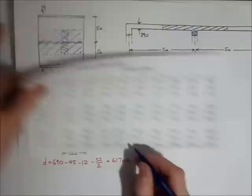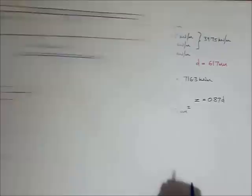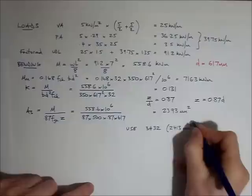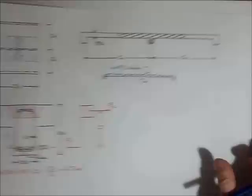So I'm going to be sticking a third bar in here. And just for completeness sake, at the end of my calcs, I'm going to say use 3H32, which gives me 2,413 millimetres squared of steel. And that is the end of the calculation for the main reinforcement in the beam.